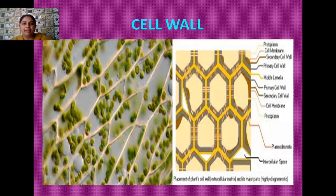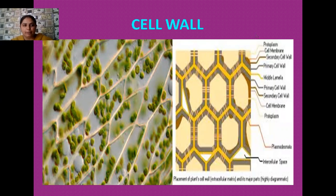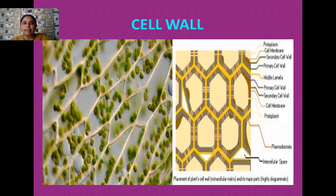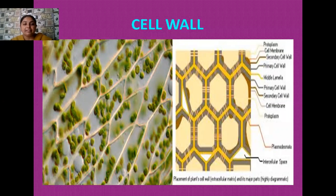Whenever we differentiate between plant cell and animal cell, our first point is that the plant cell always has an outermost boundary that is rigid and tough, and that is its cell wall. This cell wall is not present in case of animal cells. In animal cells, the outermost boundary is a membrane known as the cell membrane or plasma membrane. Plants are stationary in their habitat and have to face many types of mechanical and chemical stresses, which is why they have a rigid and tough structure as their outermost boundary known as the cell wall.